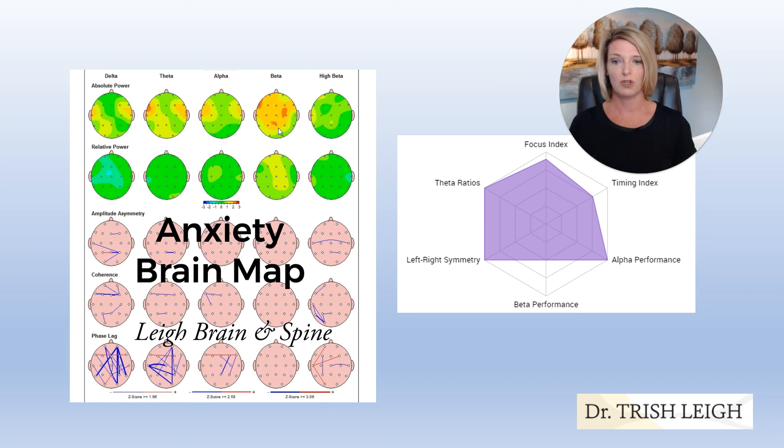So once you know that your brain is doing this and you see it with your own eyes, then you can use neurofeedback training to train down the amount of beta that you're using so that you can be calm and focused and increase your productivity and sleep better.